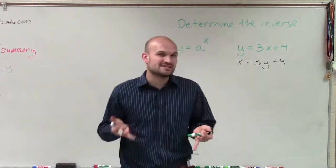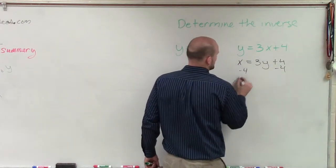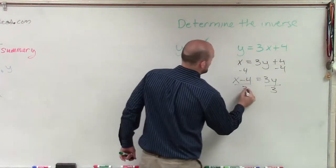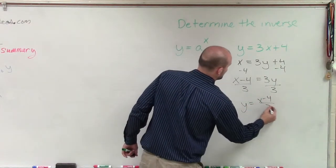And then what we do is now we'd solve for y. So to do that, you'd subtract 4 on both sides. So you had x minus 4 equals 3y. Then you divide by 3. So my inverse was y equals x minus 4 divided by 3.